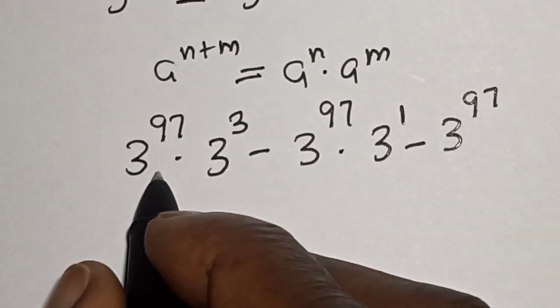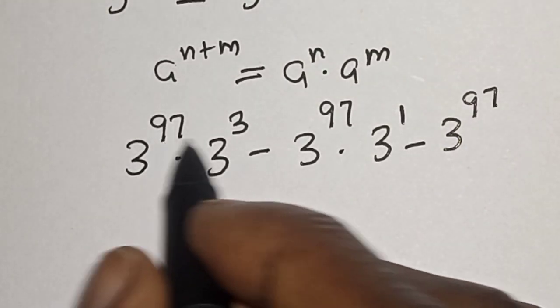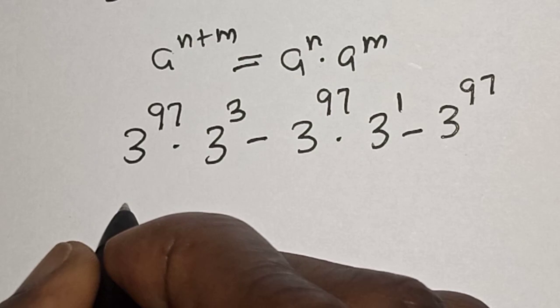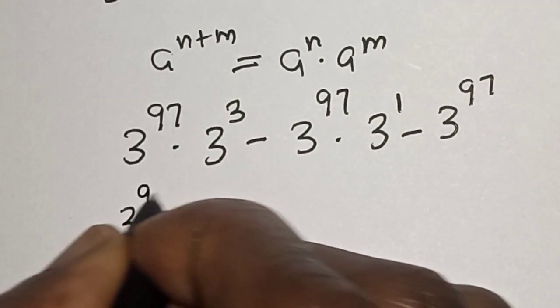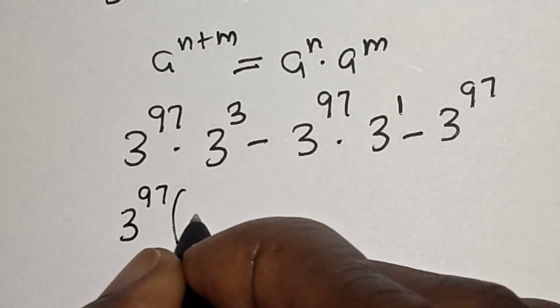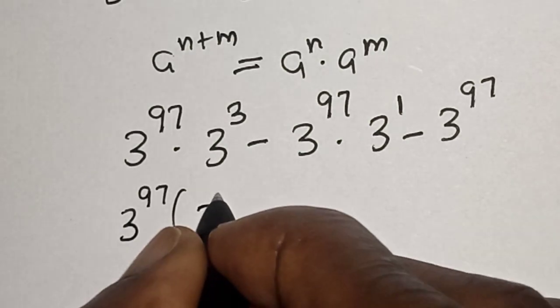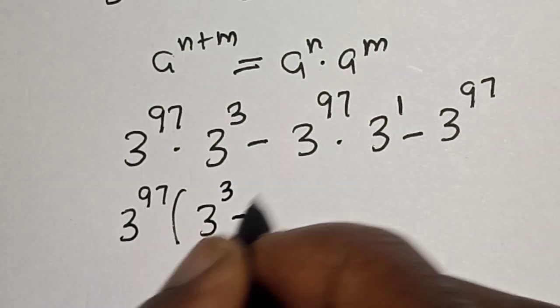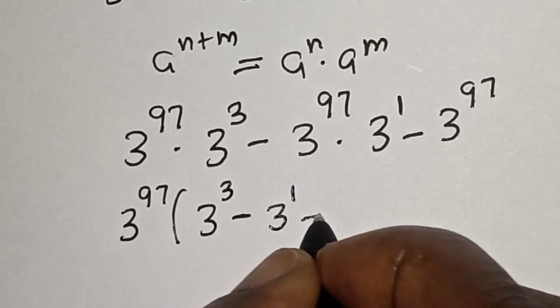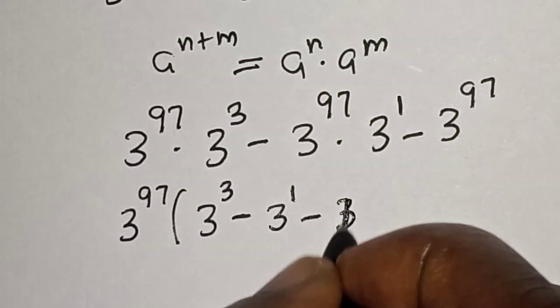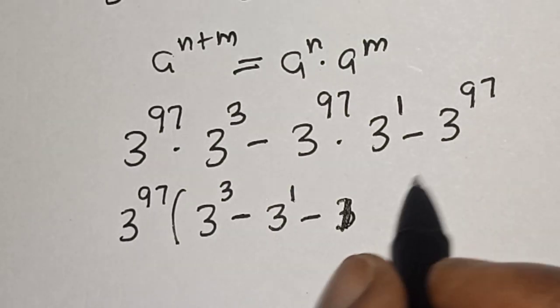If you check very well, clearly 3 to the power 97 is common. Let's bring it out: 3 to the power 97 bracket, 3 to the power 3 minus 3 to the power 1 minus 1.